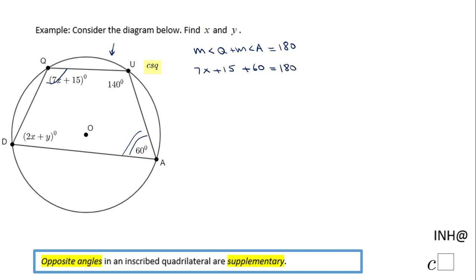Now this will allow me to find x very fast. First I'm going to combine these two numbers: 7x plus 75 equals 180. Then I'm going to subtract 75 from both sides, so I have 7x equals 105. The last thing I need to do is divide 105 by 7, and that will be x equals 15.